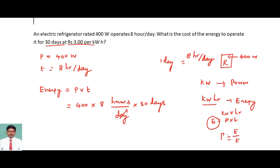The days and days cancel out. If I multiply 400 into 8 into 30, this is 400 watts and I am going to get 96,000 watt hour. I am getting the energy in terms of watt hour, so this equation can be written as 96 kilowatt hour.